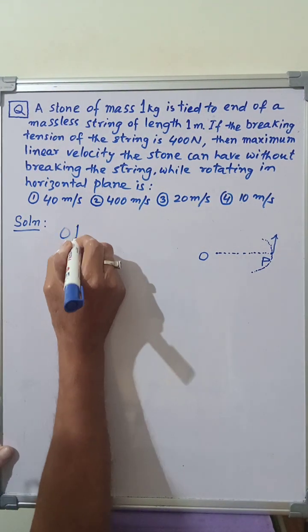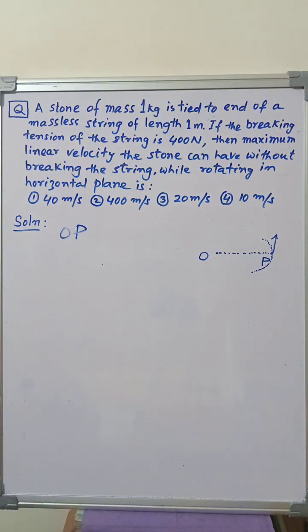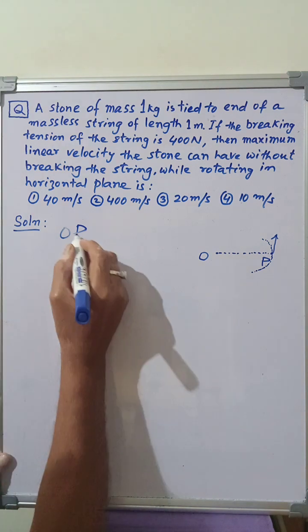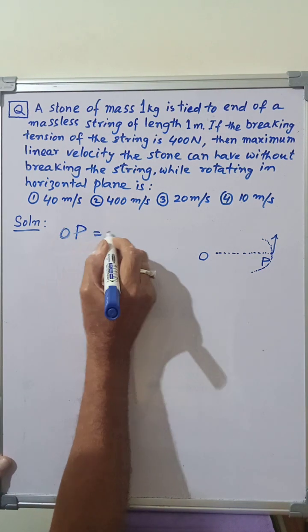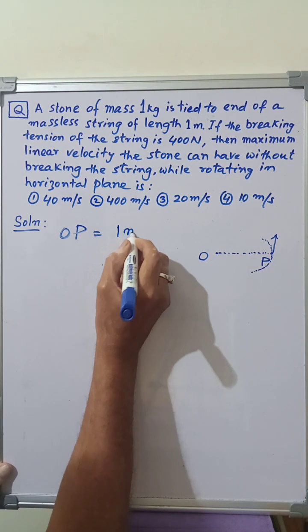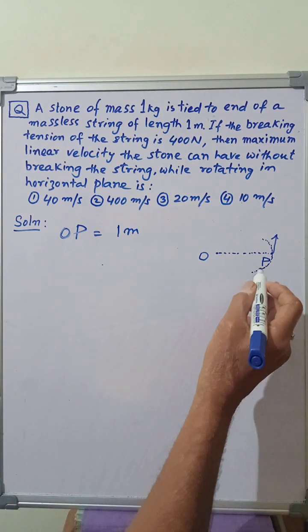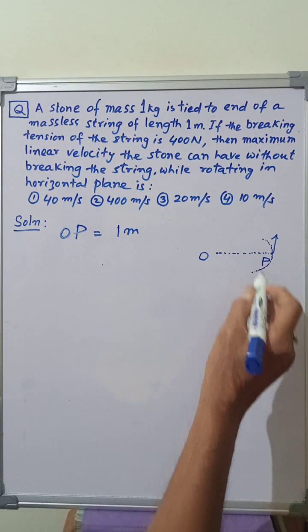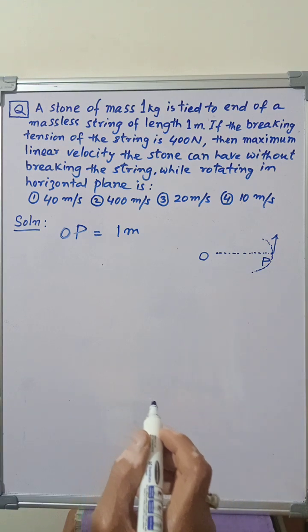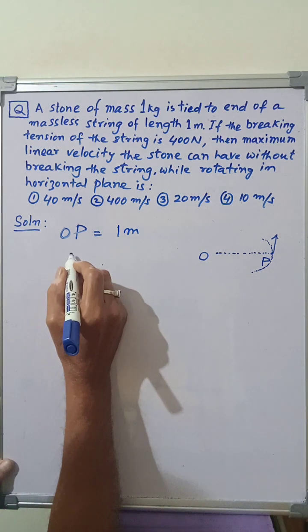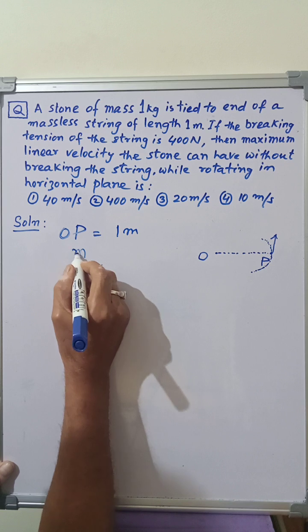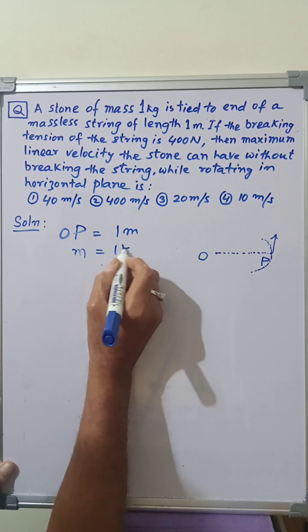OP is the length of the string and it is given in the question that the length of the string is 1 meter. Therefore, we can write OP is equal to 1 meter. The mass of the stone tied at the end P is given as 1 kg. Therefore, we can write M is equal to 1 kg.